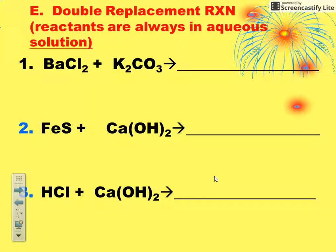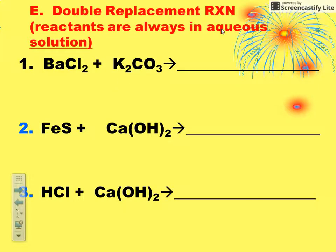Let's look at our last type of reaction. We're going to be predicting the products of a double replacement reaction. These are really pretty simple — you don't have to refer to your activity series. We're not going to worry about solubility rules here. We're just going to double replace. Remember, these are always going to be aqueous and they're going to involve ionic compounds.